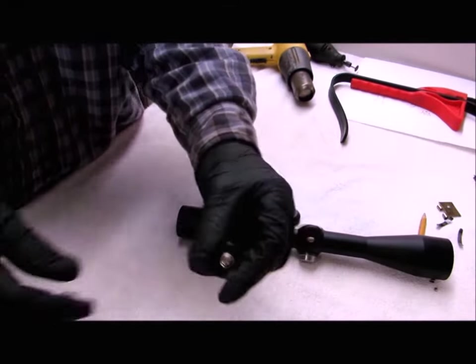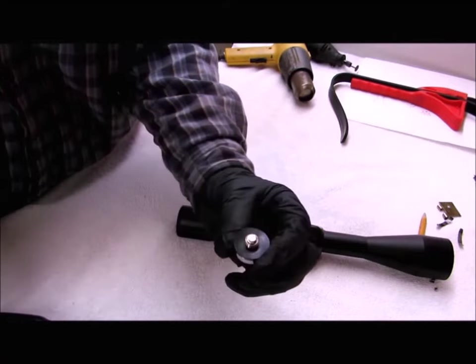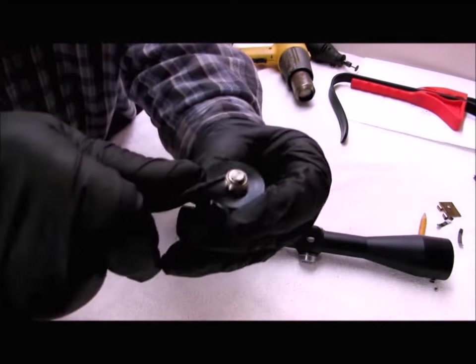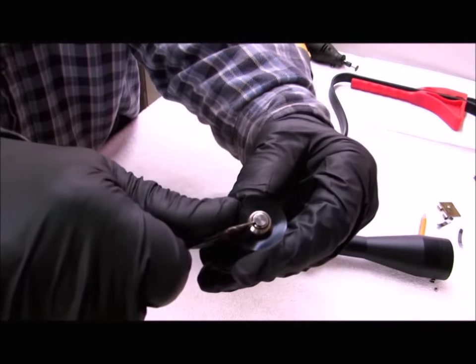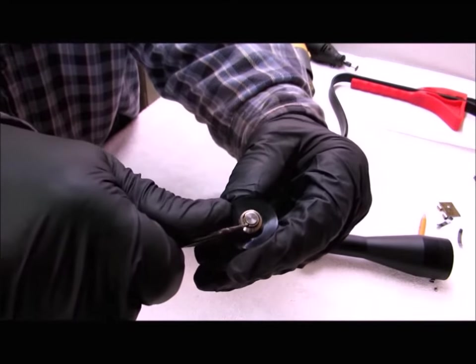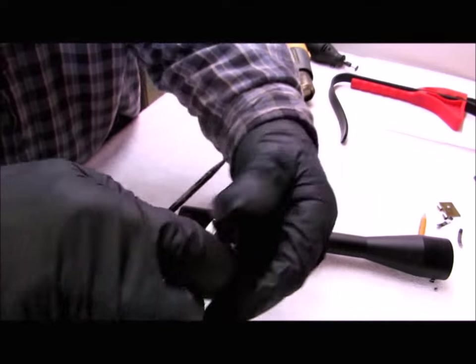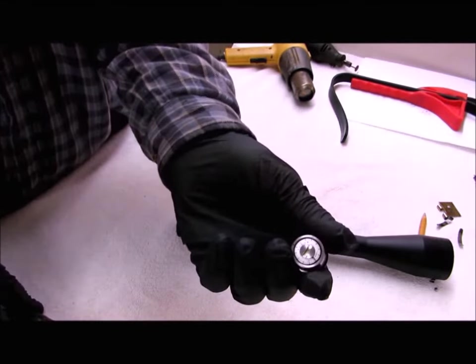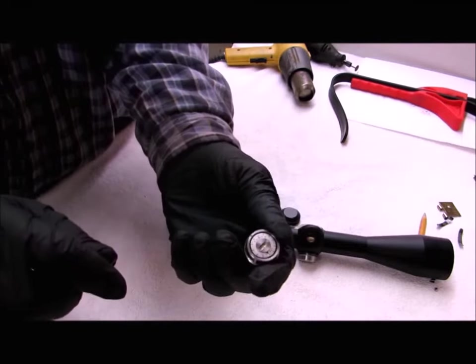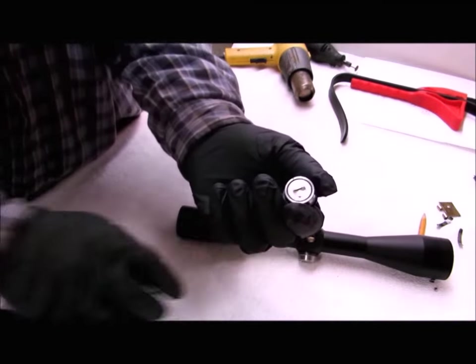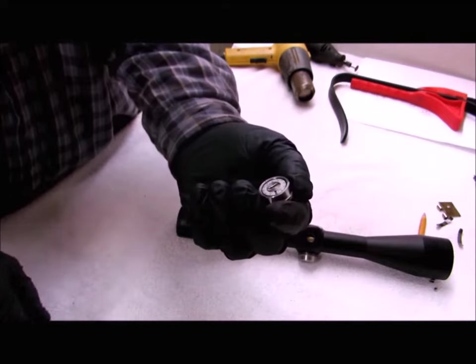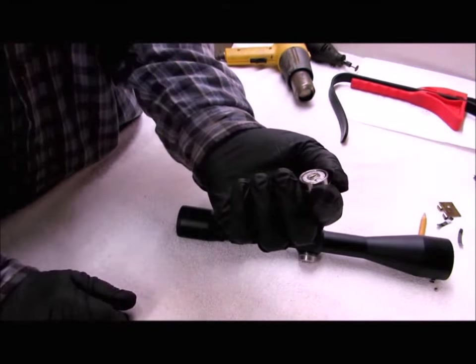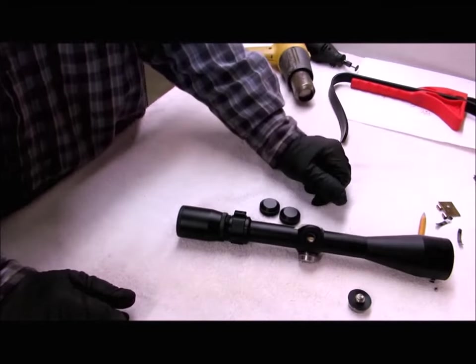Now if you need to disassemble this, if you have a broken detent spring or something of that nature, you can do that by removing this circlip. Pop that off. Then this will thread out of the turret itself. Be careful. These parts are small. You have the spring and the pin. That's why I have this towel on the table to protect against these parts bouncing when they come out.